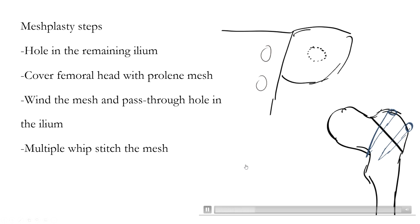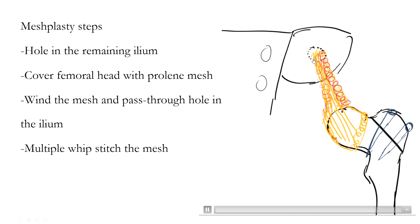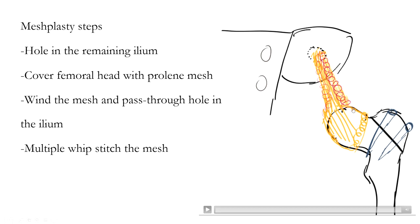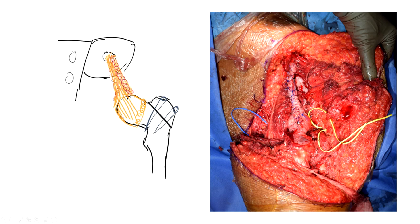To reconstruct the hip joint, meshplasty was performed. First, the greater trochanter osteotomy was secured using screws. A prolene mesh was then used to stabilize the proximal femur, passed through a hole made in the remaining ilium and wound upon itself with multiple interrupted prolene sutures and whip stitches. This stabilized the femoral head with the remaining ilium and prevented inferior translation of the limb.